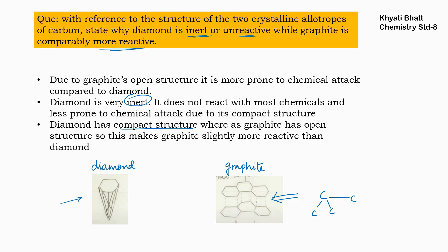That's why graphite is reactive — its structure is open, bonds are breakable, and therefore graphite is more reactive compared to diamond.